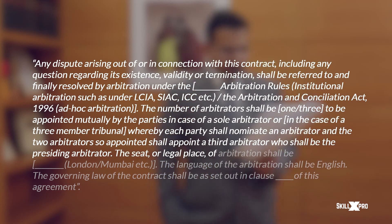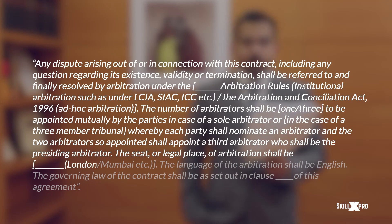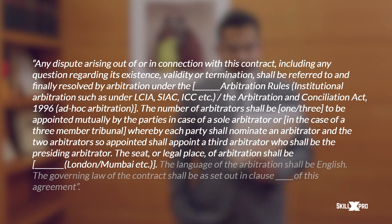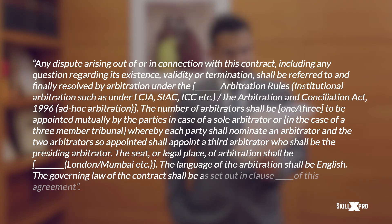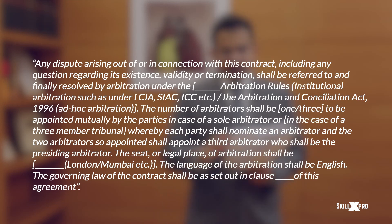The seat or legal place of arbitration shall be London, Mumbai, etc., depending upon the parties. The language of the arbitration in this case is English. The governing law of the contract shall be as set out in clause so-and-so of the agreement. So the governing law should be set out in another part of the agreement as well. Always keep your arbitration agreement or clause simple, easy to understand, not too complicated — very clear, capturing the intent of the parties — and also state the governing law as well as the language of arbitration.